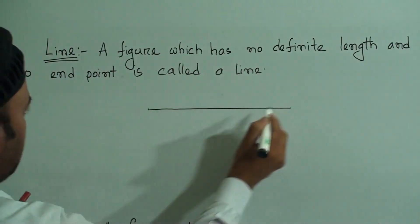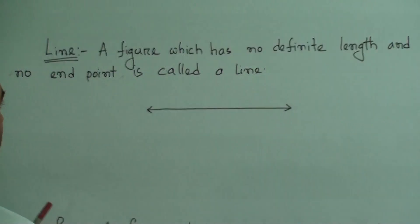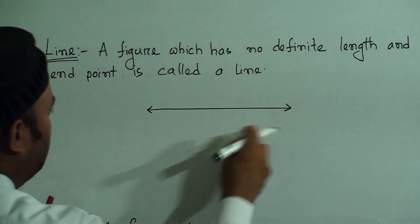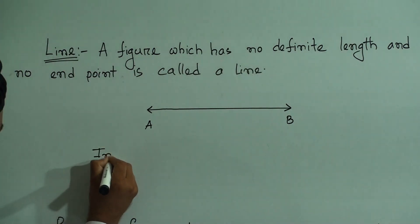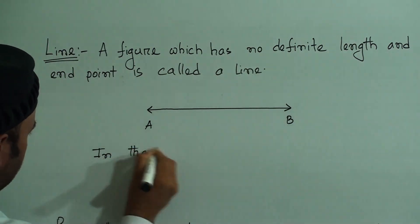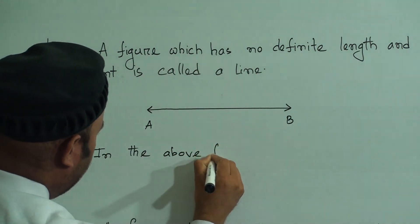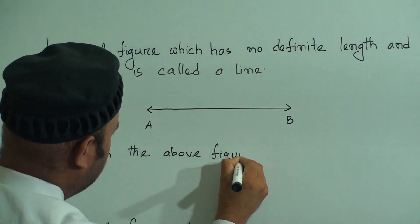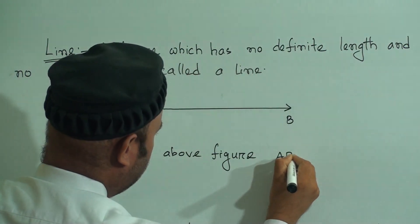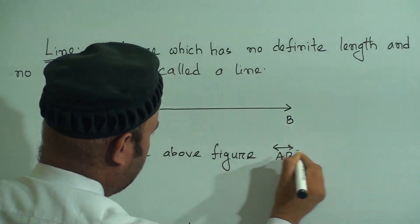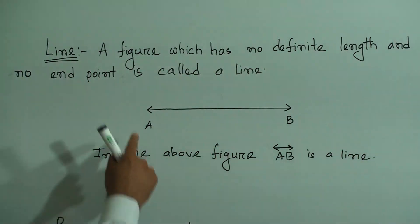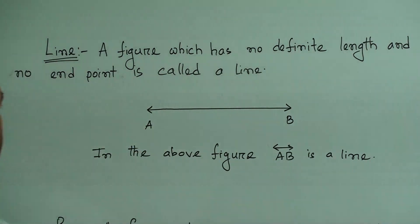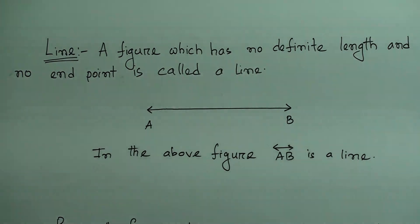That means there is no definite length, and which has no end point. Here it is A and it is B. In the above figure, AB is a line. So AB has no definite length and no end point, so it is called a line.